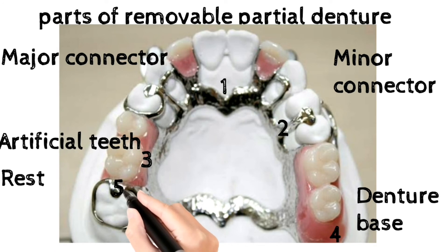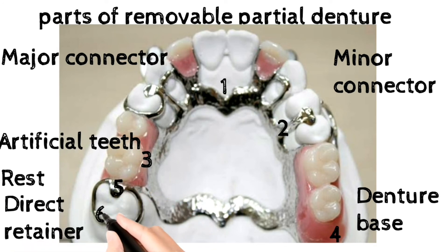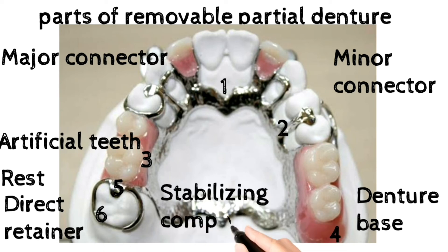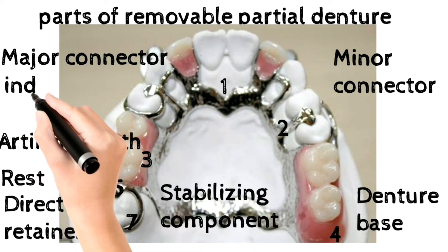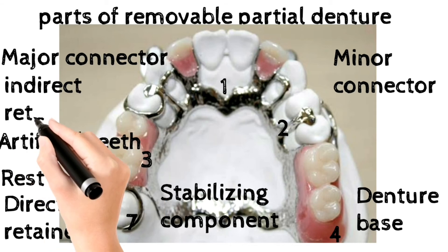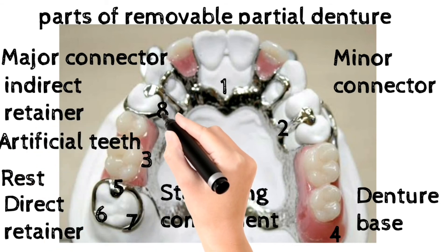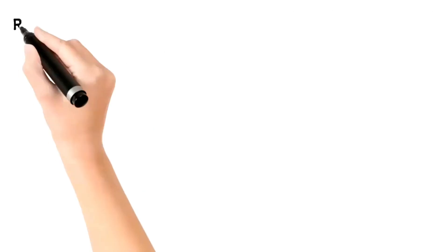Number 5 shows the Rest. Number 6 shows the Direct Retainer. Number 7 shows the Stabilizing Component. Number 8 shows the Retainer.